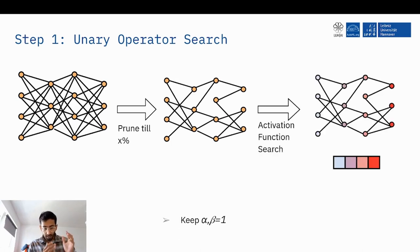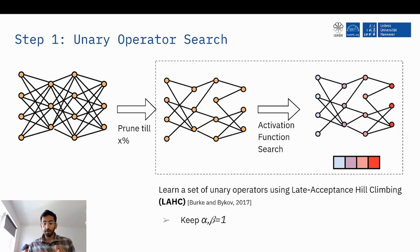The first step is, given a pruned network at a desired sparsity, we simply just search for the unary operator keeping the scaling parameters as one. And we do this using a meta heuristic for discrete optimization called late acceptance hill climbing.